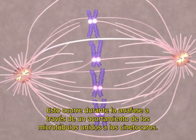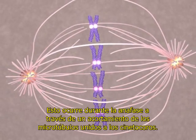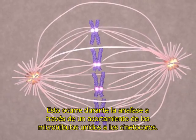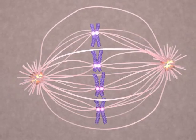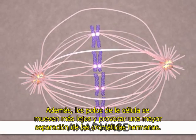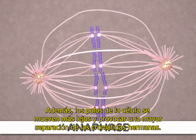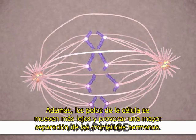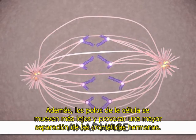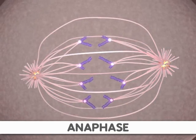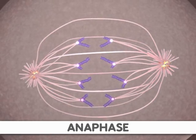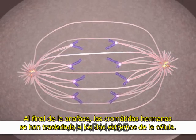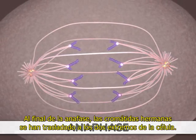This occurs during anaphase through a shortening of the microtubules attached to the kinetochores. Additionally, the poles of the cell move farther apart, causing increased separation of sister chromatids. At the end of anaphase, the sister chromatids have moved to the two ends of the cell.